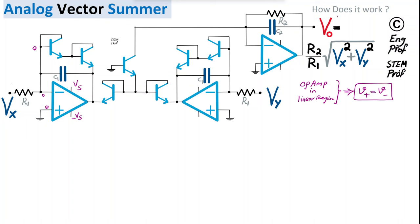The base voltage of transistor T1 is therefore zero. The seven transistors are named T1 through T7 as labeled in the circuit.